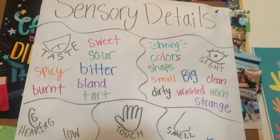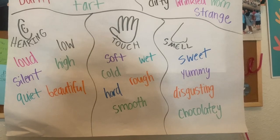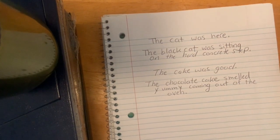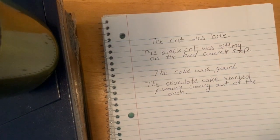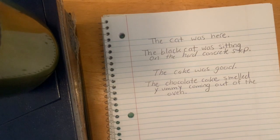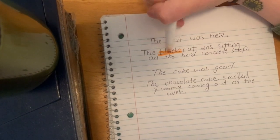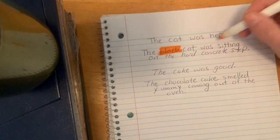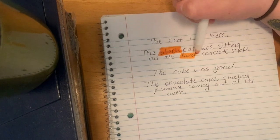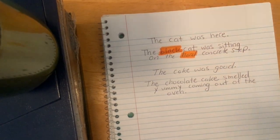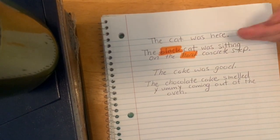These different examples are things you could use in your writing to help your reader see what you are talking about. Here are two small examples. The first one says: 'The cat was here.' If I was the reader, I wouldn't know where the cat was. So as a writer, I might go back and add some sensory details. I added 'the black cat' — black is a sight word — 'was sitting on the hard' — something we feel or touch — 'concrete step.' Those two details help our readers see more about where the cat actually is.